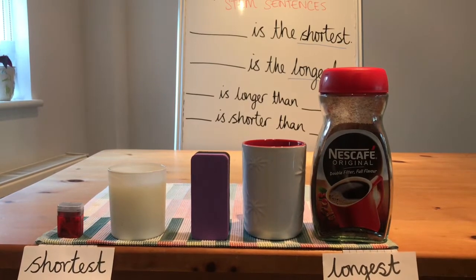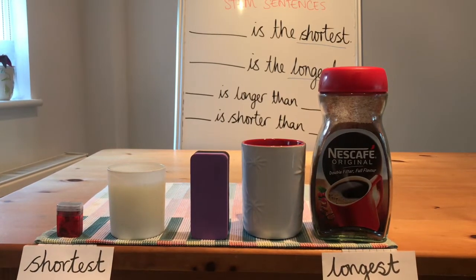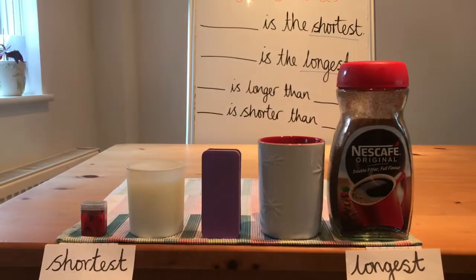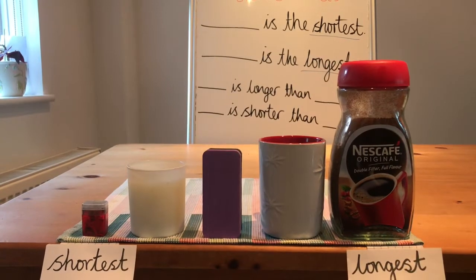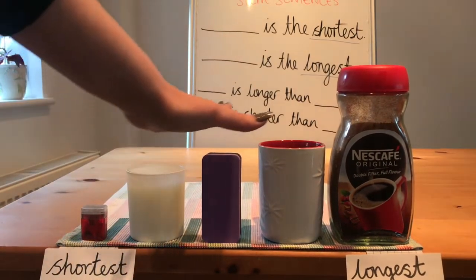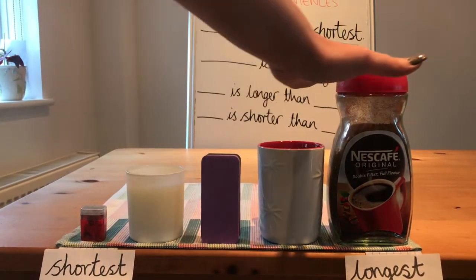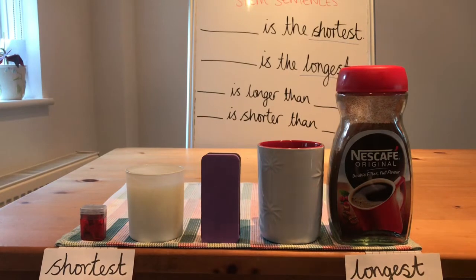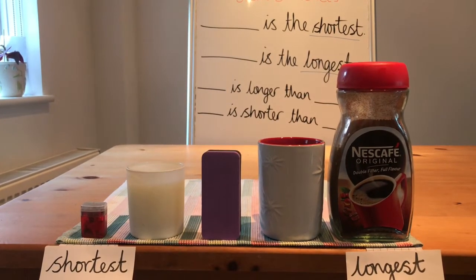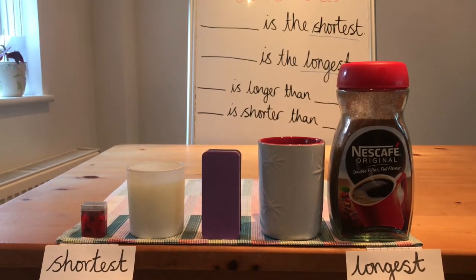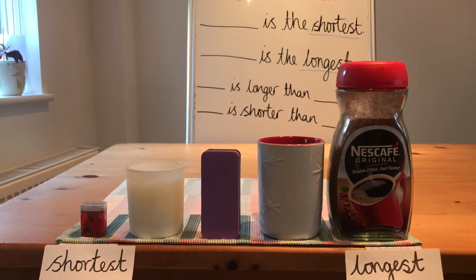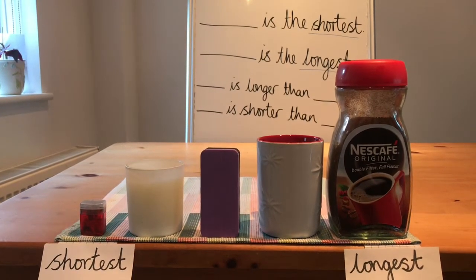We have now ordered our items from shortest to longest. Once you've ordered your objects you should see that the lengths increase or get bigger until you reach the object with the longest length. Looking at our objects in order of length, I'd like you to complete the stem sentences about them. Please upload these to Tapestry. Pause the video here.